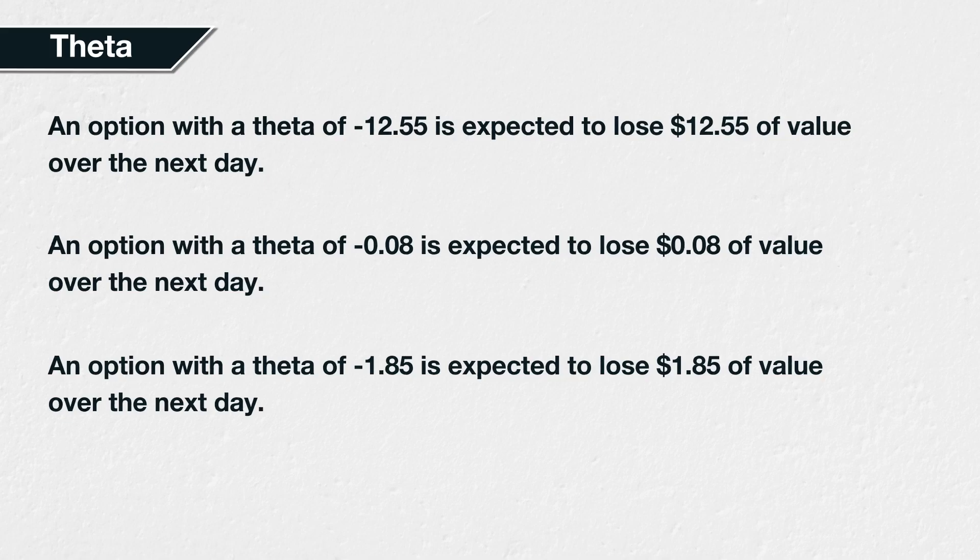Theta is stated as a dollar amount — the amount of dollars the option price is currently decreasing by per 24 hours, assuming all else remains constant. Even on the Deribit platform, where the option premiums are paid and received in amounts of cryptocurrency, the Greeks are quoted in their dollar amounts, as calculated by the Black-Scholes option pricing model.